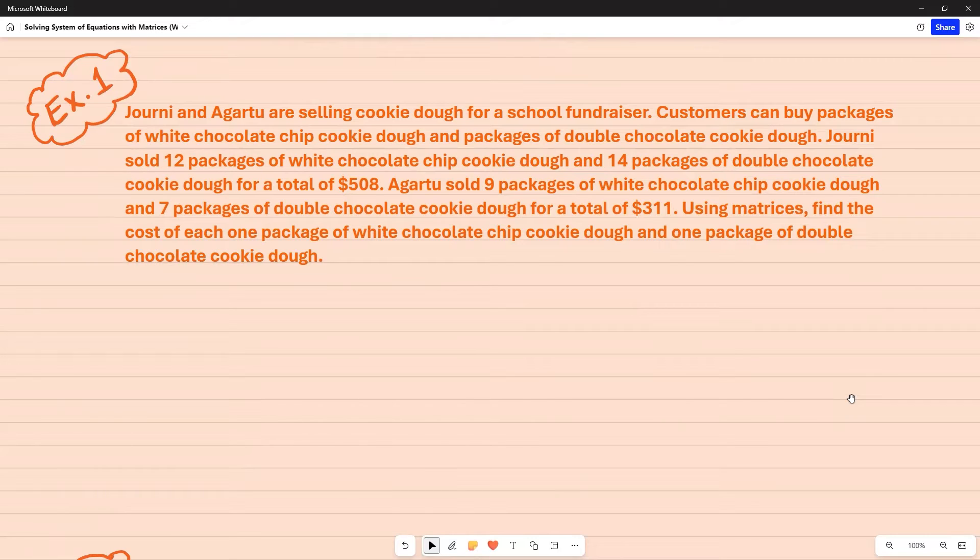Agartu sold 9 packages of white chocolate chip cookie dough and 7 packages of double chocolate cookie dough for a total of $311. Using matrices, find the cost of each one package of white chocolate chip cookie dough and one package of double chocolate cookie dough.